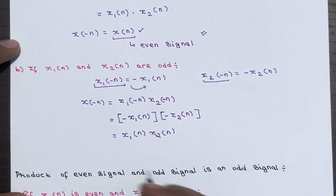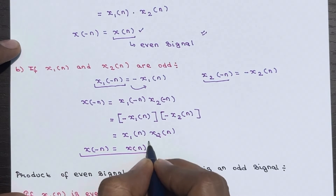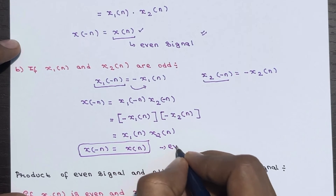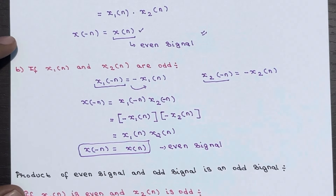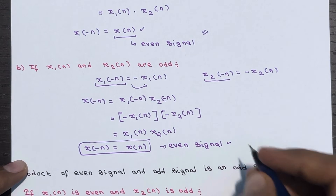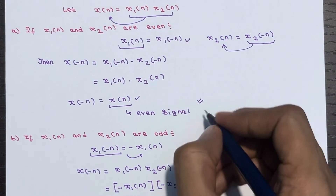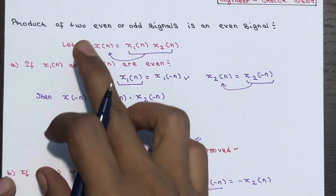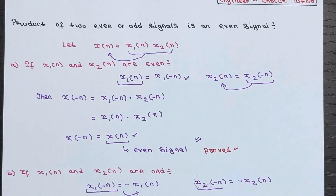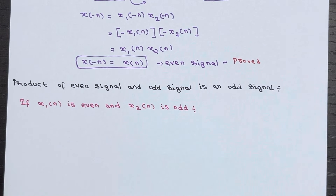This result x1(n) · x2(n) is simply x(n), so we have x(-n) = x(n), which is the condition for an even signal. Therefore, the product of two odd signals also gives an even signal — both cases are proved. So the first statement is proved: the product of two even or two odd signals is an even signal. Now let's move to the next statement: the product of an even signal and an odd signal is an odd signal.